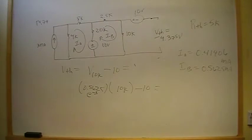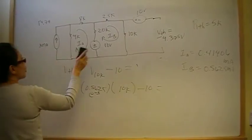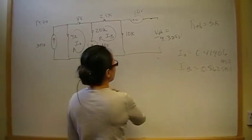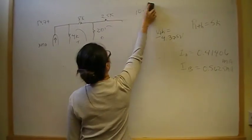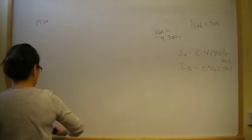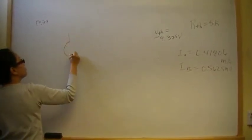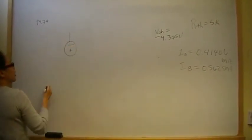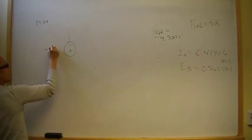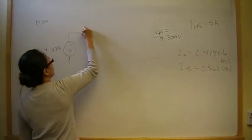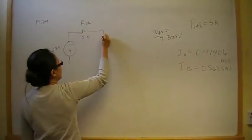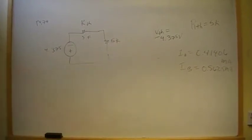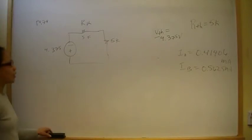We needed V-Thevenin in order to find the maximum power that can be delivered from this circuit. We redraw the entire circuit as its Thevenin equivalent: a voltage source of 4.375 V (polarity minus-plus, voltage rise downward) in series with R-Thevenin = 5k. To maximize power transfer, we match the load to 5k, so R-naught = 5k.